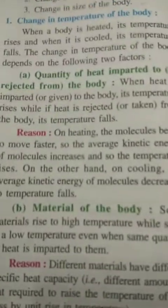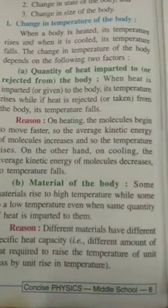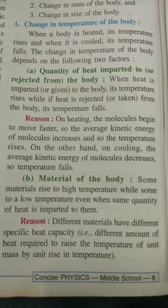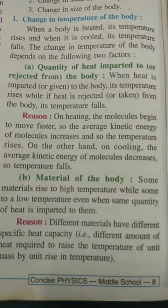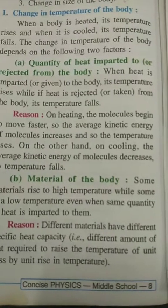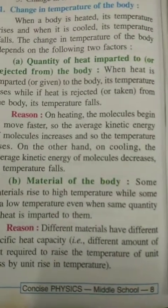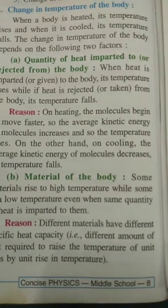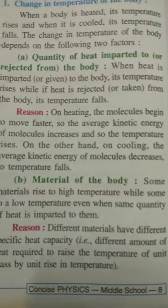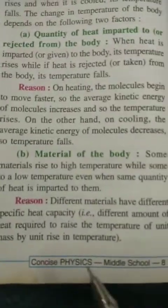The next factor is the material of the body — what type of material the body is made of. For example, iron gets heated faster because it is a good conductor of heat, whereas plastic heats slowly because it is an insulator.